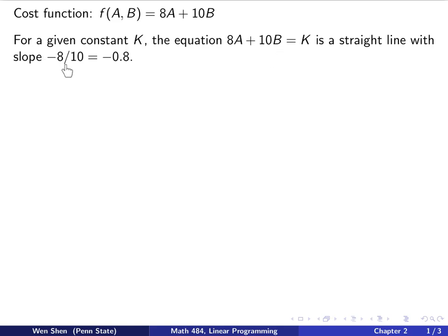The slope of the line is exactly negative 10 over 8, which is negative 0.8. So the slope goes down. And for different K values, you will just have parallel lines. They all have slope negative 0.8, but they are parallel to each other.